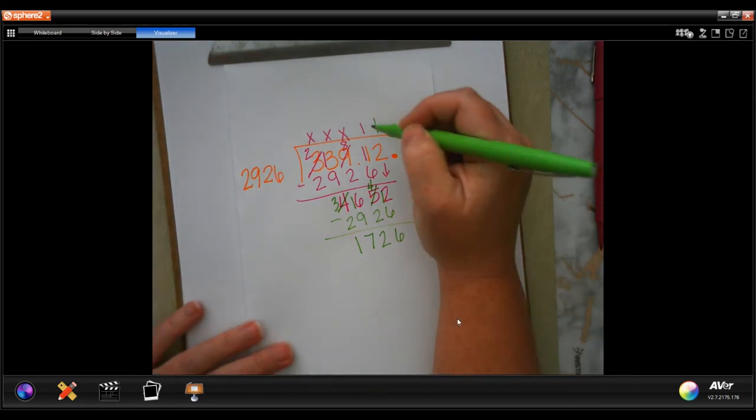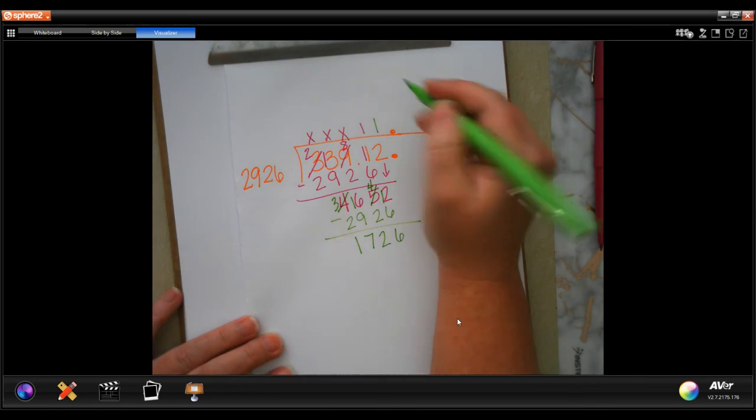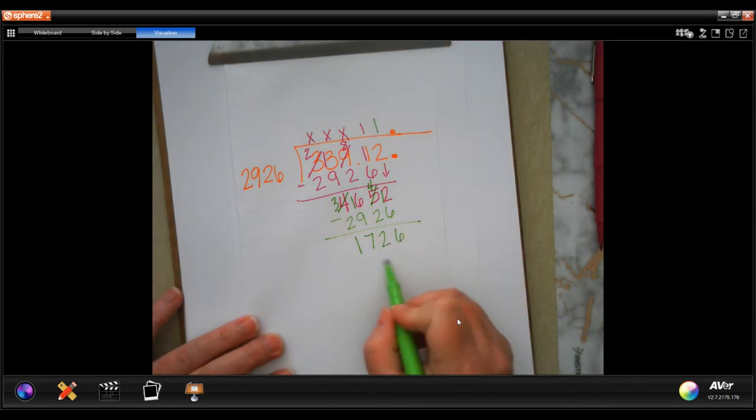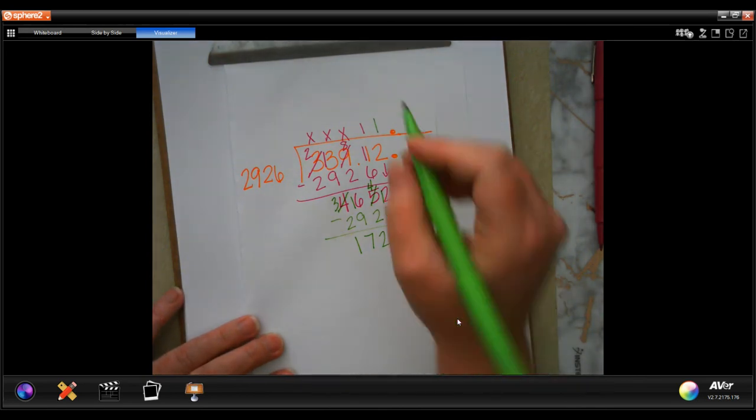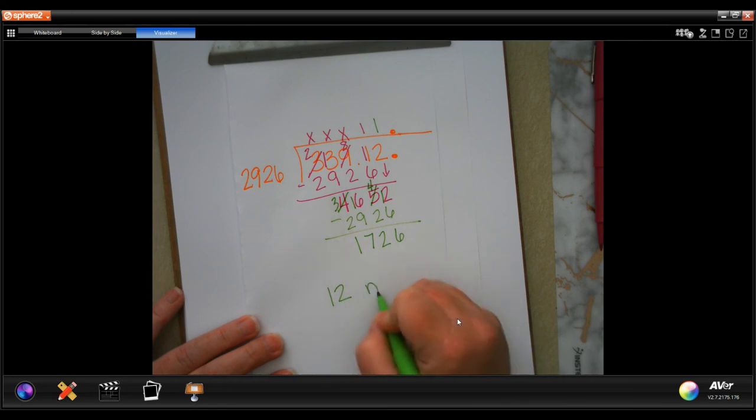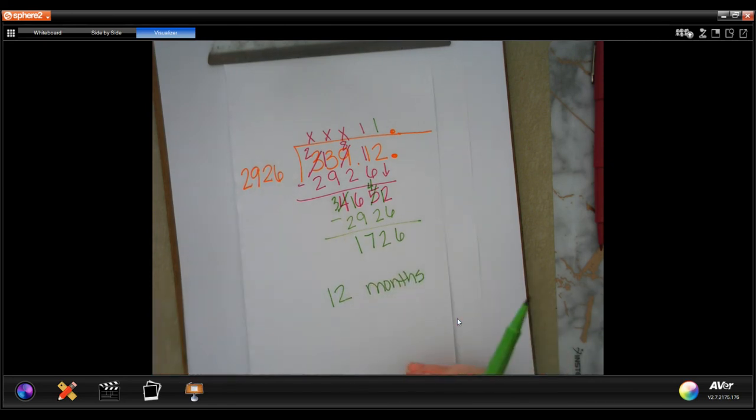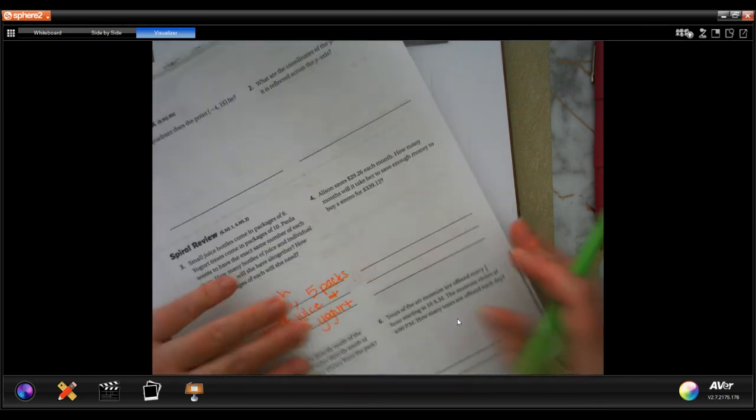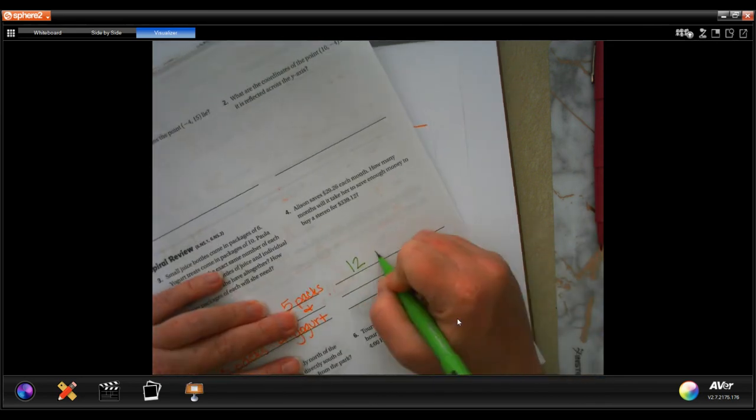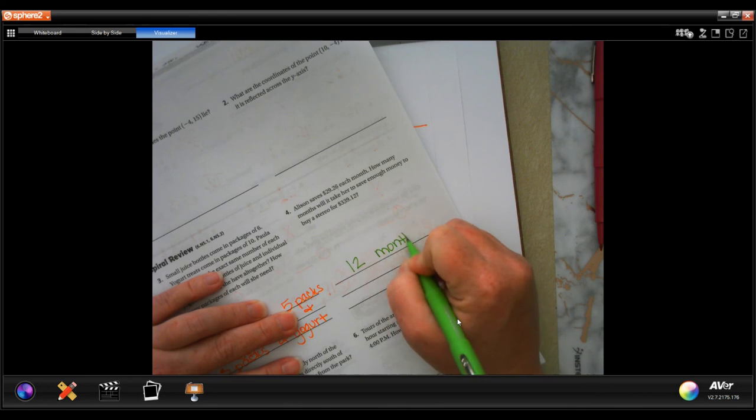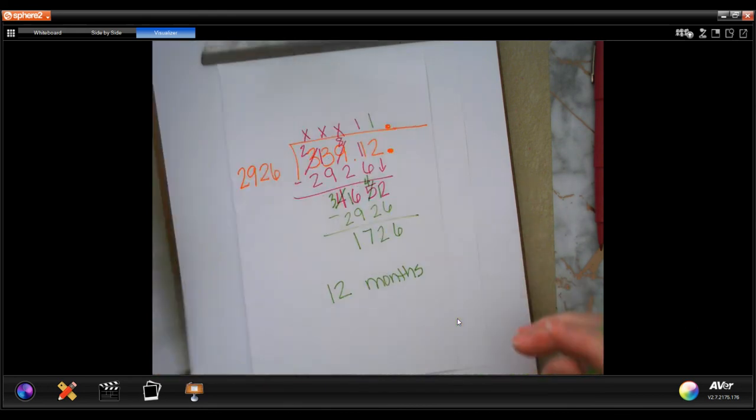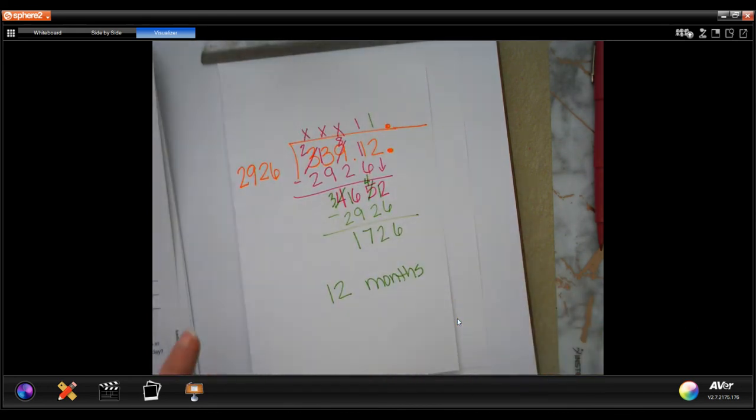So it just wants to know how many months. We are going to say you can't have 11 point something months, that means that since there's still money left over that she has to raise, we're going to say 12 months. It's going to be 11 point something, but we're going to say 12 months. Write down your work, it's important.